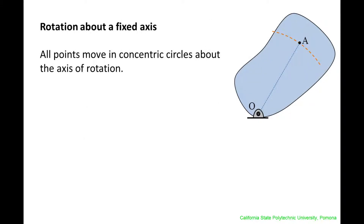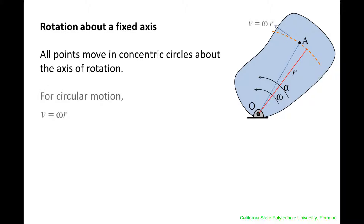When a rigid body rotates about a fixed axis, all points on the body move in concentric circles about the axis of rotation. The body shown here is rotating at an angular speed omega and an angular acceleration alpha, and the distance from the axis of rotation to a particle is r. The linear velocity of the particle is perpendicular to the path and has a magnitude of omega times r. The tangential component of the linear acceleration is alpha times r, and the normal component of the linear acceleration is omega squared times r.